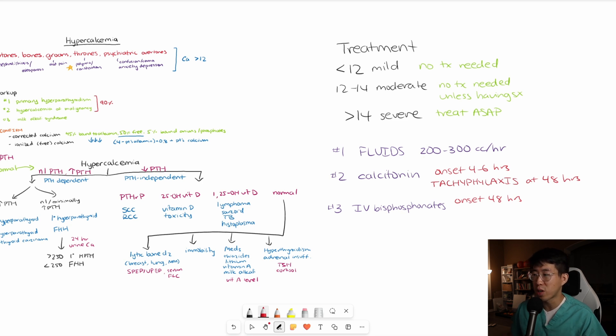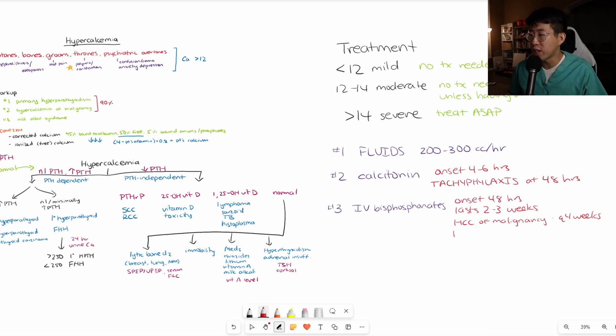It works out really well because the IV bisphosphonates take basically 48 hours to start having action. This also helps prevent bone resorption and osteoclast activity. As that calcitonin is wearing off, that's when your IV bisphosphonate is going to start kicking in. It lasts like two to three weeks. It has a very long duration of action. If somebody has hypercalcemia of malignancy, you should be repeating this every four weeks to maintain calcium homeostasis. The preferred one is zoledronic acid or zometa. It's been shown to have faster resolution of hypercalcemia.